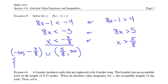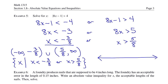In set builder notation, this would be the set of x such that x is less than negative 3/8 or x is greater than 5/8. On the number line, mark negative 3/8 and 5/8. For x is less than negative 3/8, it's open and facing toward the left — shade everything less than that number including the arrow. For x is greater than 5/8, it's open at 5/8 but facing toward the right — shade everything on the right side including the arrow.